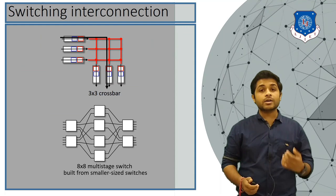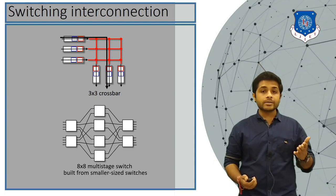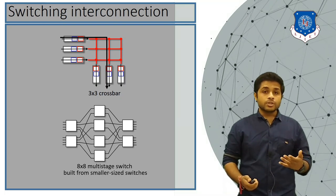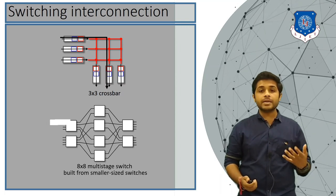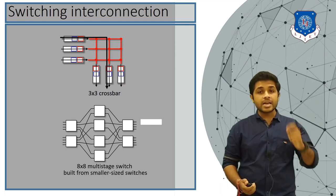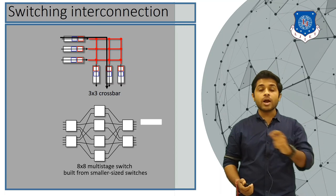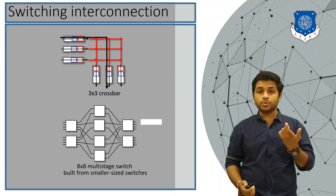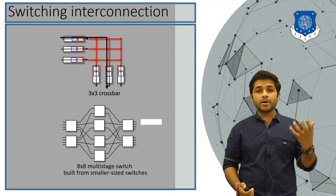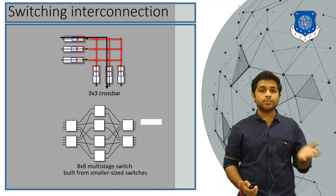Now let's see switching using an interconnection network. The input and output ports are connected using a 3×3 crossbar or an 8×8 multi-stage switch. When packets are received, they are divided and transferred from the input port to output port via a dedicated line between each input and output port. Each input port is connected to all output ports, and each output port is connected to all input ports. Packets select the proper path and the data is moved accordingly.